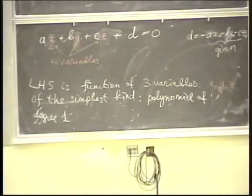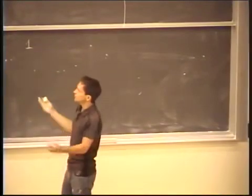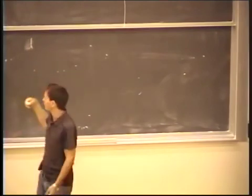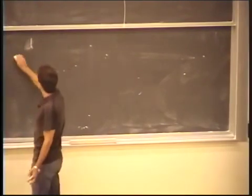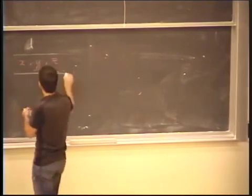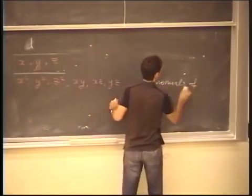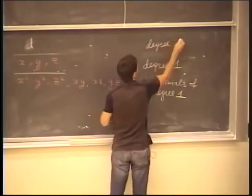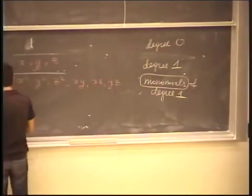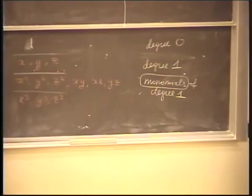We see that the left-hand side is a function of three variables x, y, z of the simplest possible kind — each variable enters at most to degree one. It's a polynomial of degree one. The simplest possible functions we could write are: degree zero (a constant), then degree one monomials x, y, z, then degree two monomials x squared, y squared, z squared, and mixed terms xy, xz, yz. As the degree grows, the number of independent monomials grows very fast — it's a good exercise to find a formula for that count.